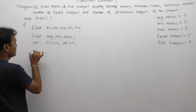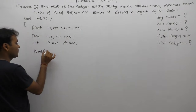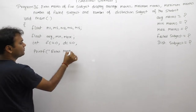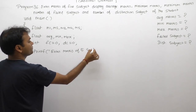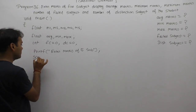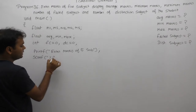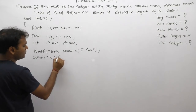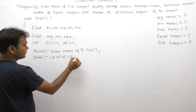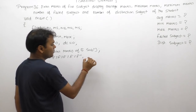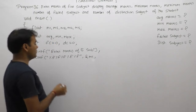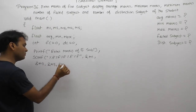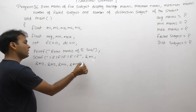Then reading inputs: print a message to enter marks of five subjects. Next, scan and read marks data for M1, M2, M3, M4, and M5. Five subjects' marks are read.